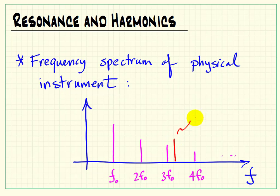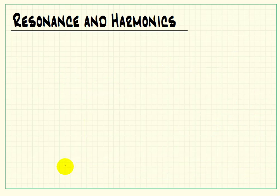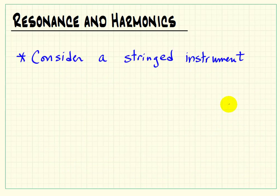But why integers? Why not something else? For example, why don't we have overtones located at pi times the fundamental frequency? Well, it all comes down to the concept of resonance for physical structures.